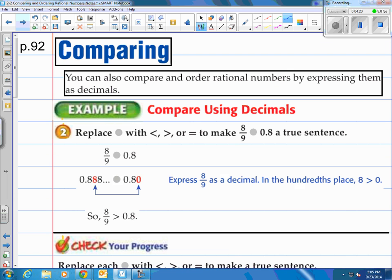Let's take a look at more comparing. It says you can also compare and order rational numbers by expressing them as decimals. A lot of kids like to take the fractions and turn them into decimals. Not always the easiest, but you can do it that way. Take a look at the example they have here. It says replace the circle with less than or greater than or equal to make 8 ninths, and you have to determine what goes in there to 0.8, which is 8 tenths, a true sentence.